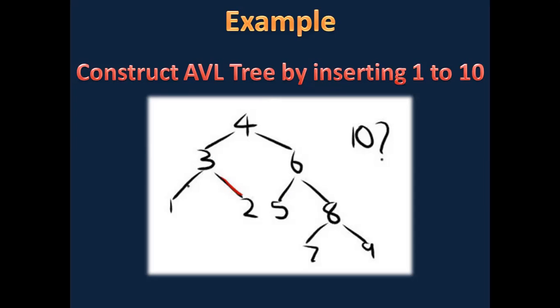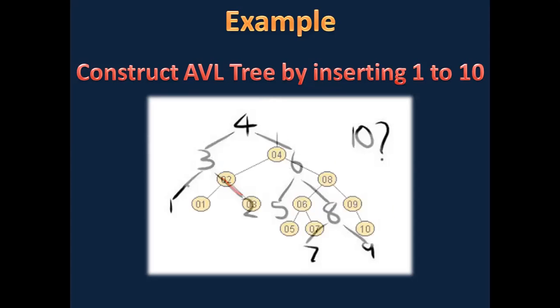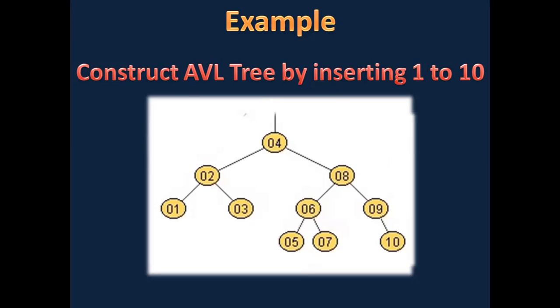After inserting 10, this is ultimately our AVL tree. This is how we perform insertions in an AVL tree and balance it using left and right rotations. Let's look at one more example for insertion, after which we will head toward the deletion operation in AVL trees.